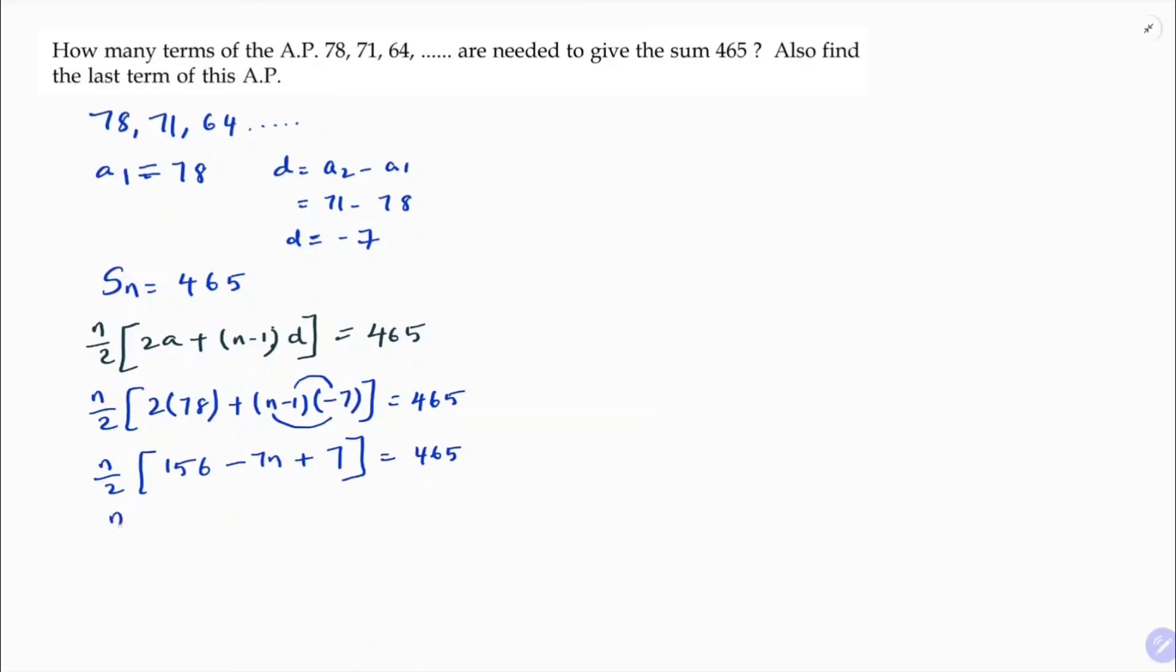Now n by 2, 156 plus 7, 156 plus 7 is 163 minus 7n equals 465. So here n by 2. So n into 163 minus 7n is 465 into 2.